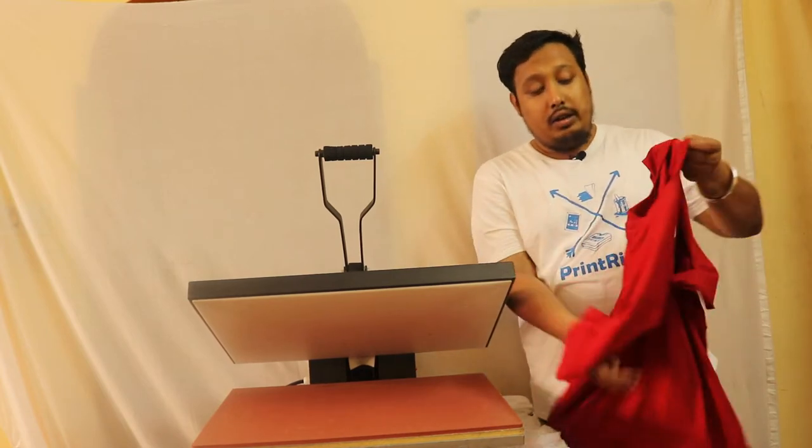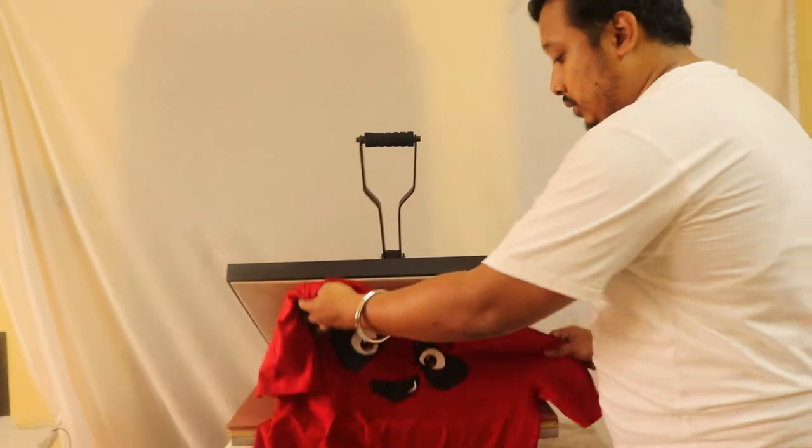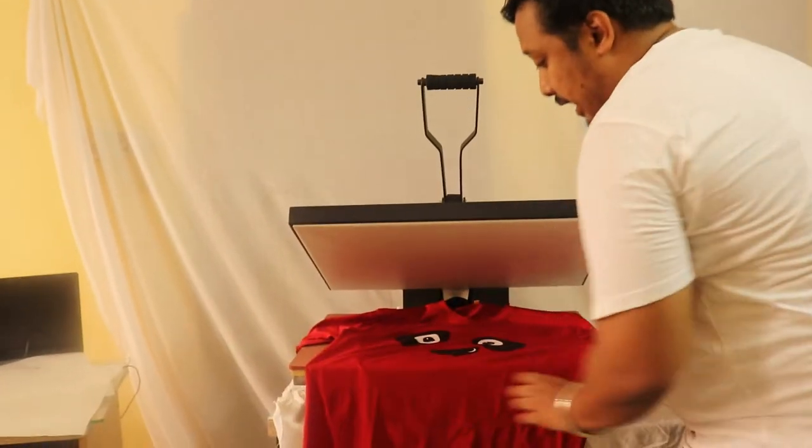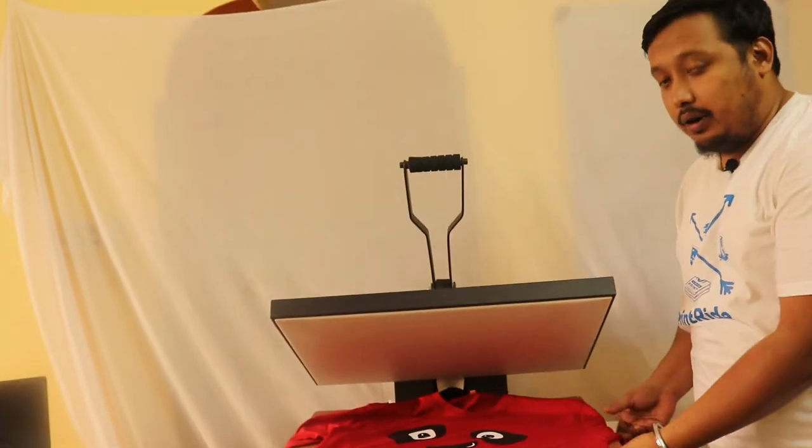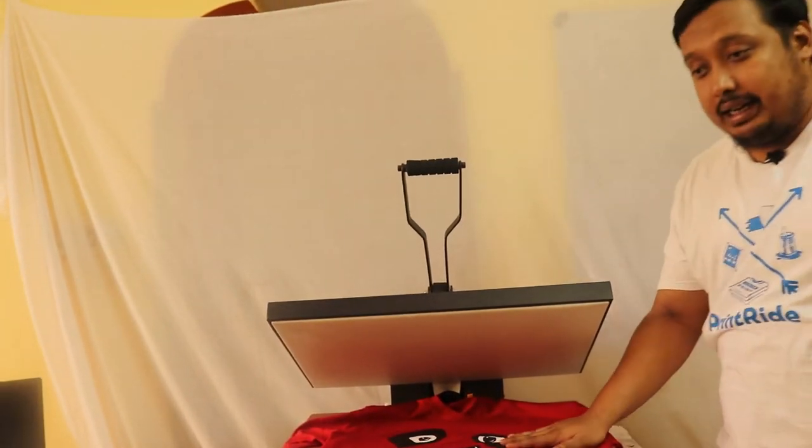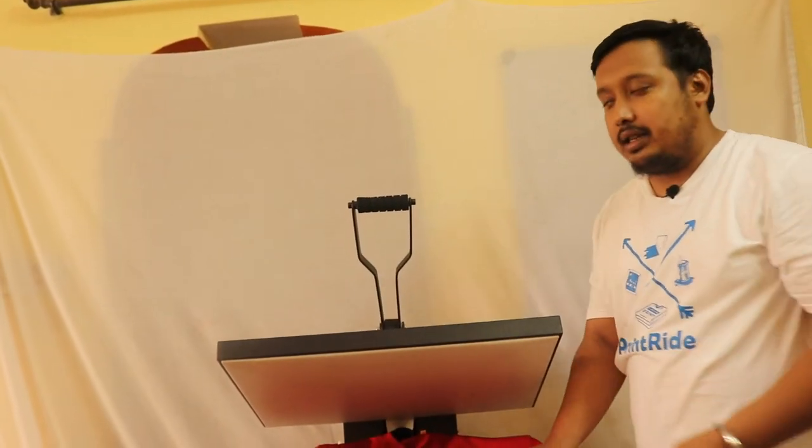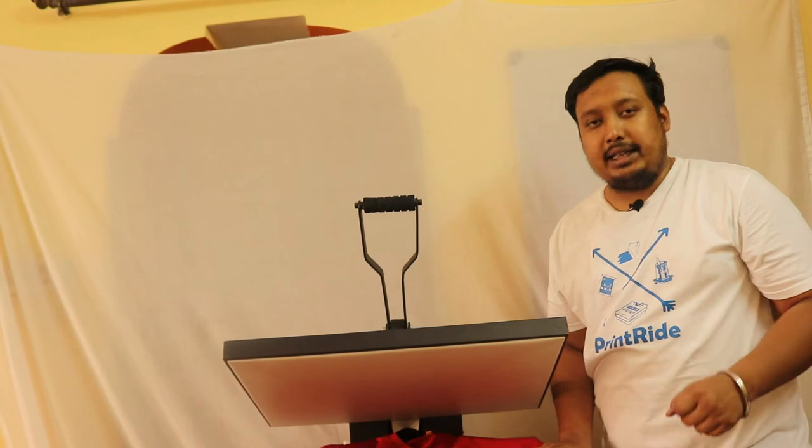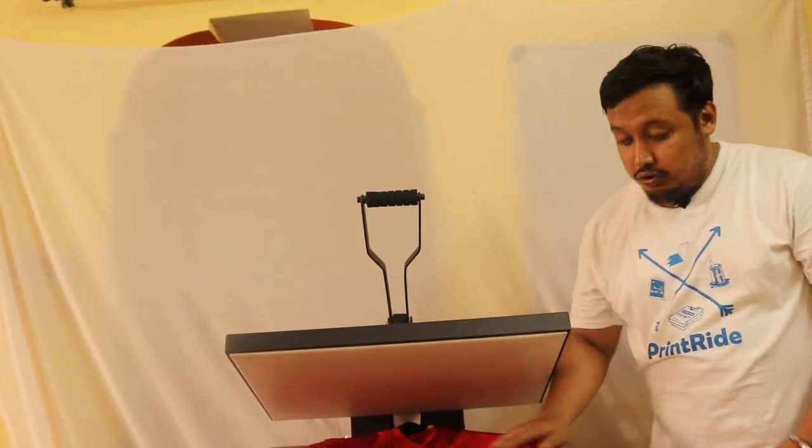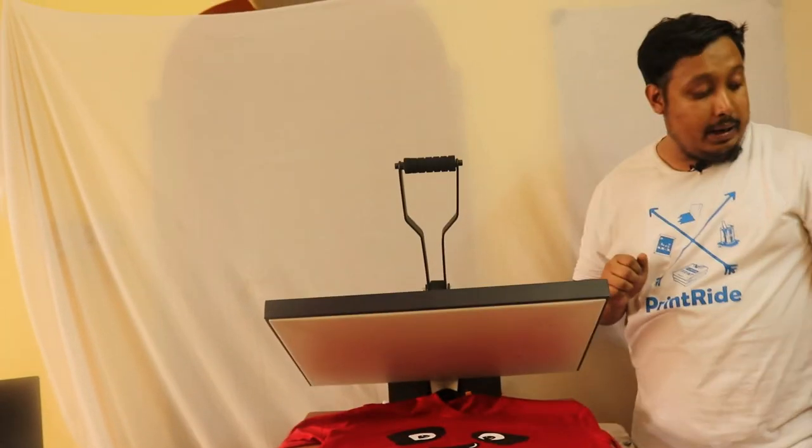So for that we need to put the t-shirt in heat press. We have done it with the help of flash ink, and flash ink dries in heat press in three seconds. So we prefer 10 seconds, and this is your choice. So we are going to put the t-shirt and fuse it in heat press.